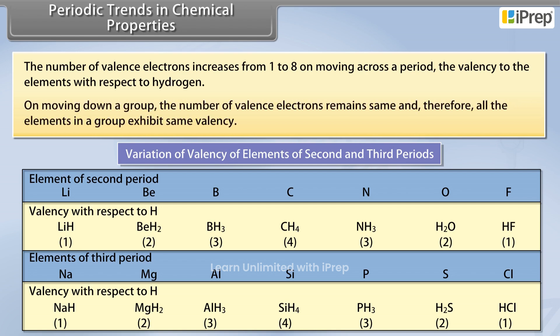On moving down a group, the number of valency electrons remains the same and therefore all the elements in a group exhibit the same valency.